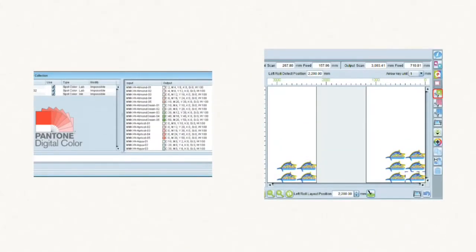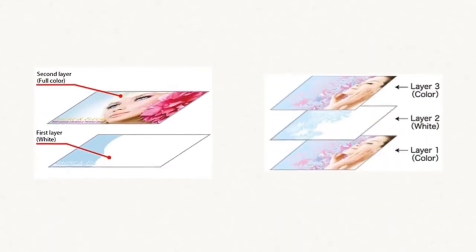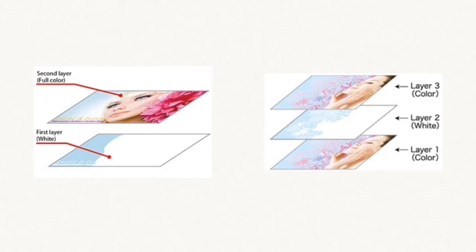Users can easily activate advanced functions such as spot color replacement, dual roll printing, and print cut workflows, taking advantage of core technologies such as Mamaki Fine Diffusion and Continuous Mark Detect. Layered plate and composite printing for special white, metallic silver, or clear printing workflows are accessible quickly without the need for complicated art files.